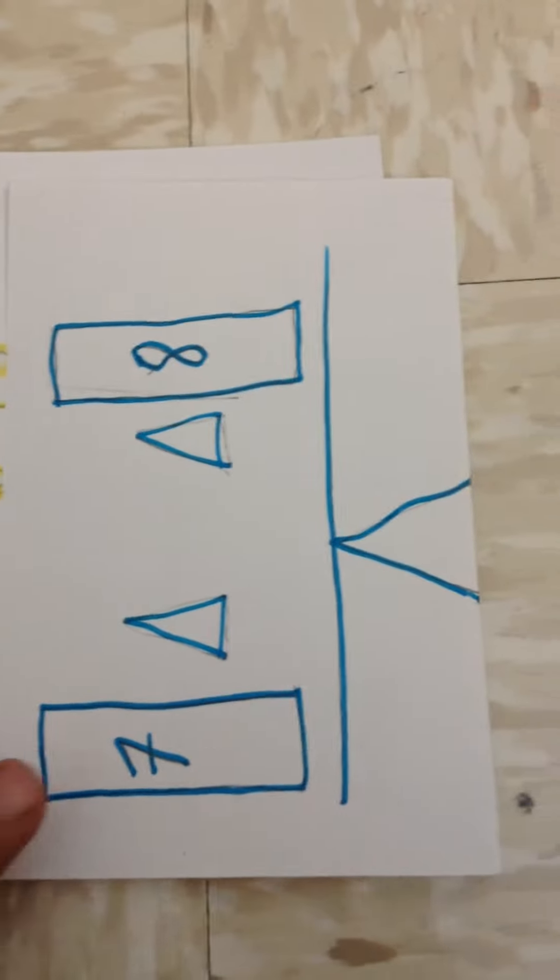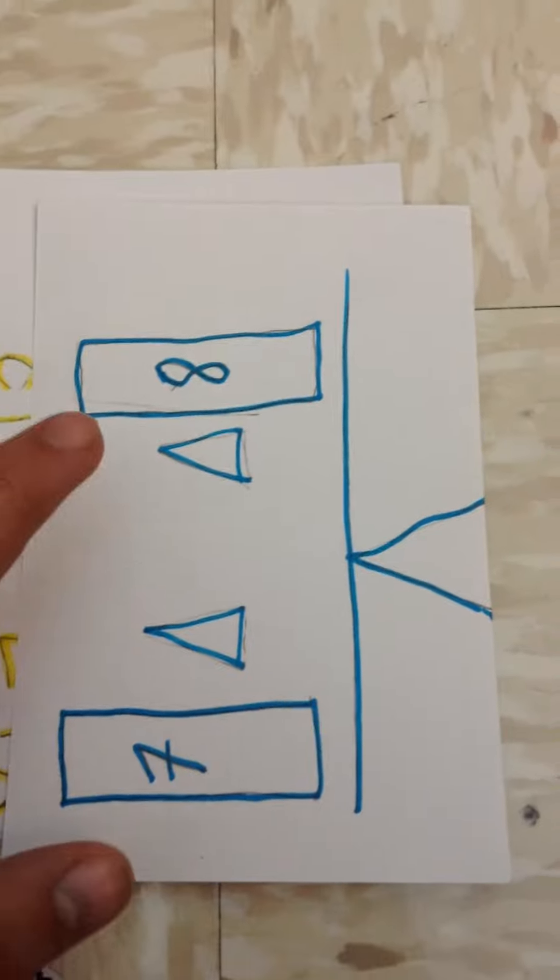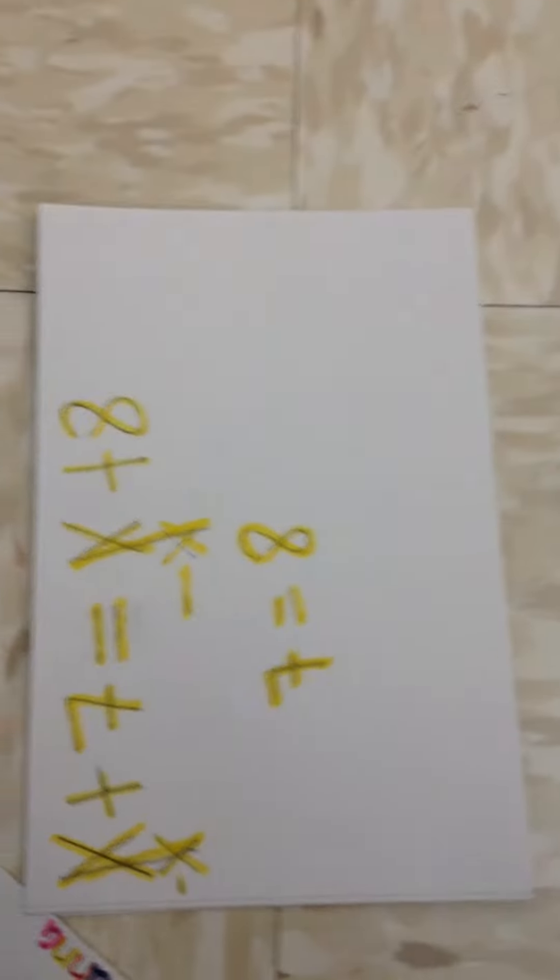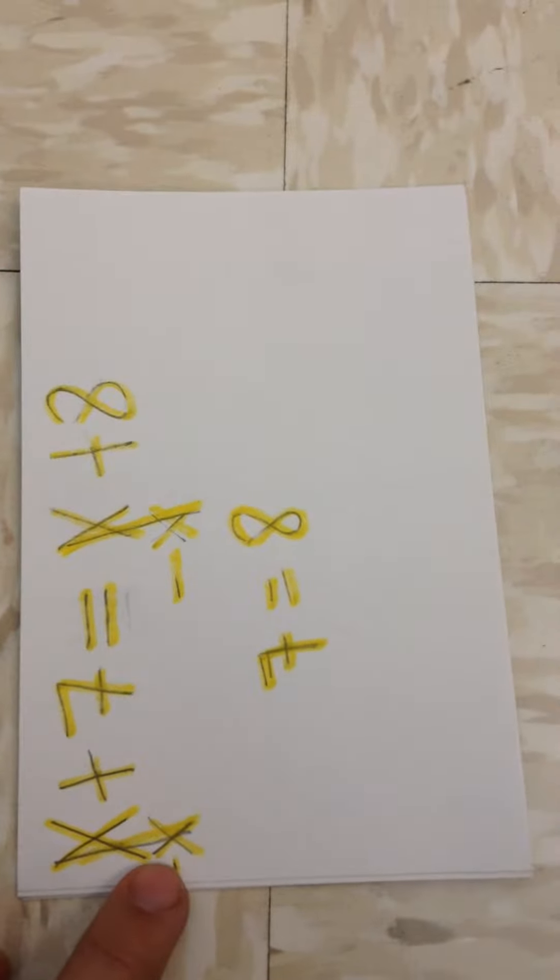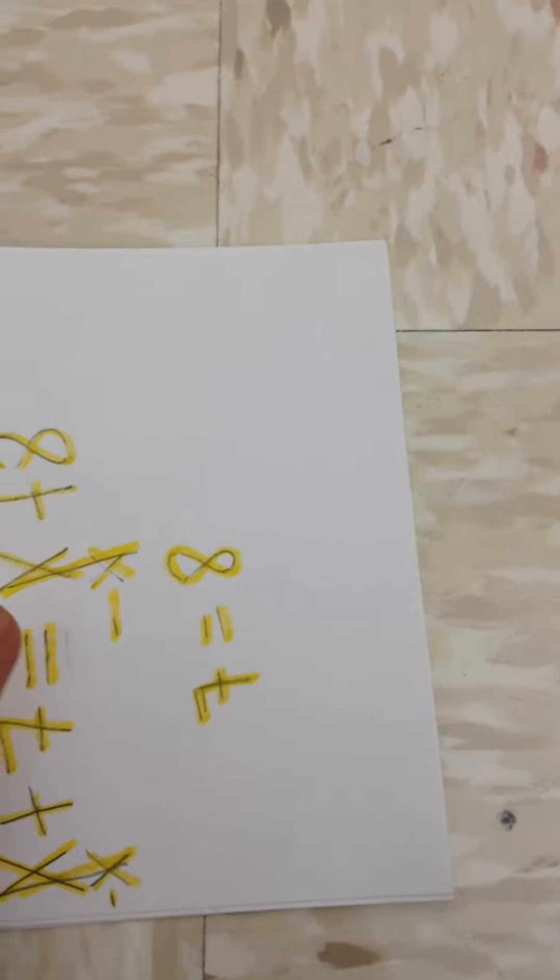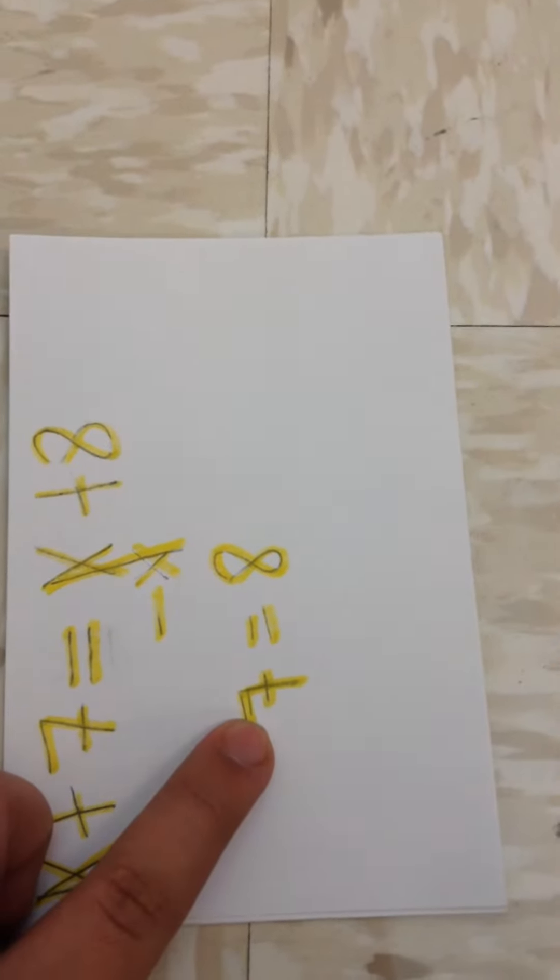Right here we have 7x is equal to x plus 8. And what we have to do is we have to take away an x on both sides, which will equal 7 plus 7 is equal to 8, and that will never work.